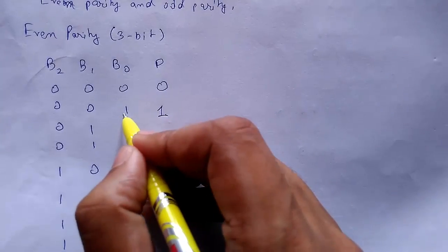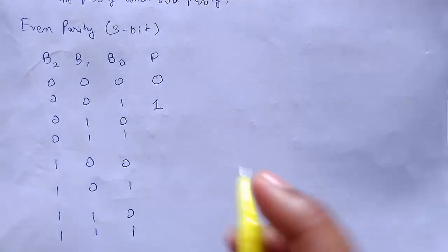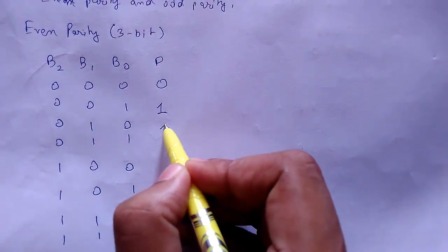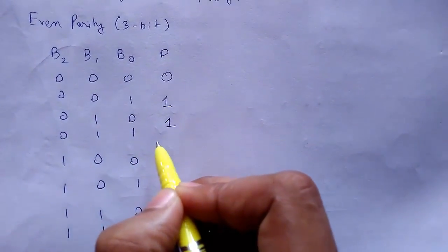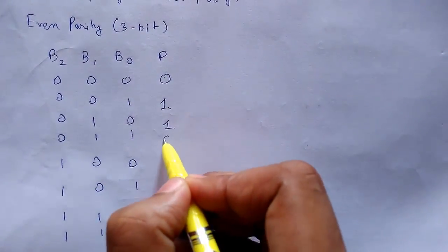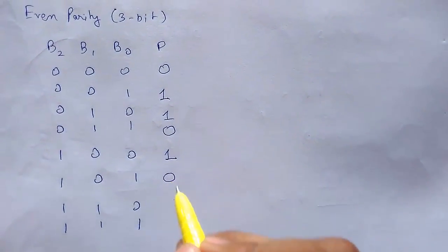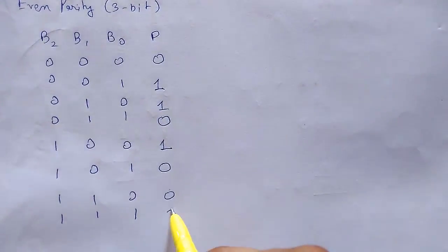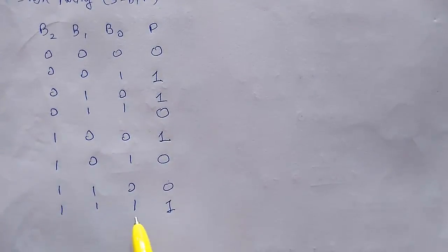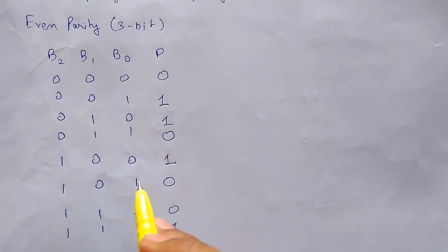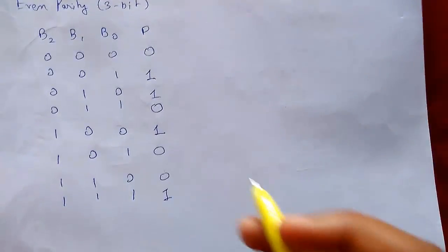Now when we have one 1, the parity bit should be 1 so that 1 plus 1 equals 2, which is even. When there are already two 1s, the parity bit will be 0. We continue this way, ensuring the total number of ones is even for each row. This creates an even parity table.